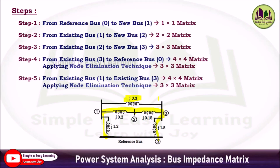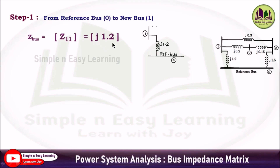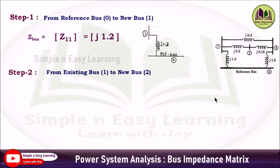Step 1: from the reference bus to bus 1. The reactance is j1.2. Z-bus equals Z11 alone and the value will be j1.2 — it is a 1×1 matrix.